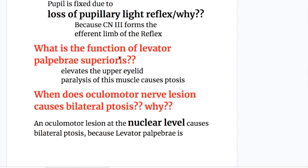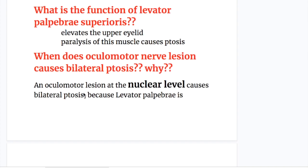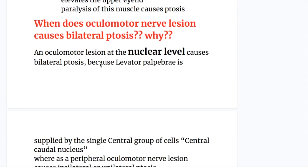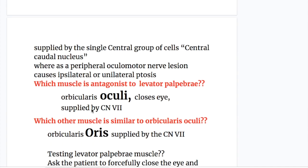What is the function of the levator palpebrae superioris muscle? The levator palpebrae muscle elevates the upper eyelid, and paralysis of this muscle causes ptosis. An oculomotor nerve lesion at the nuclear level causes bilateral ptosis because the levator palpebrae is supplied by the single central caudal nucleus, whereas a peripheral oculomotor lesion causes ipsilateral or unilateral ptosis.